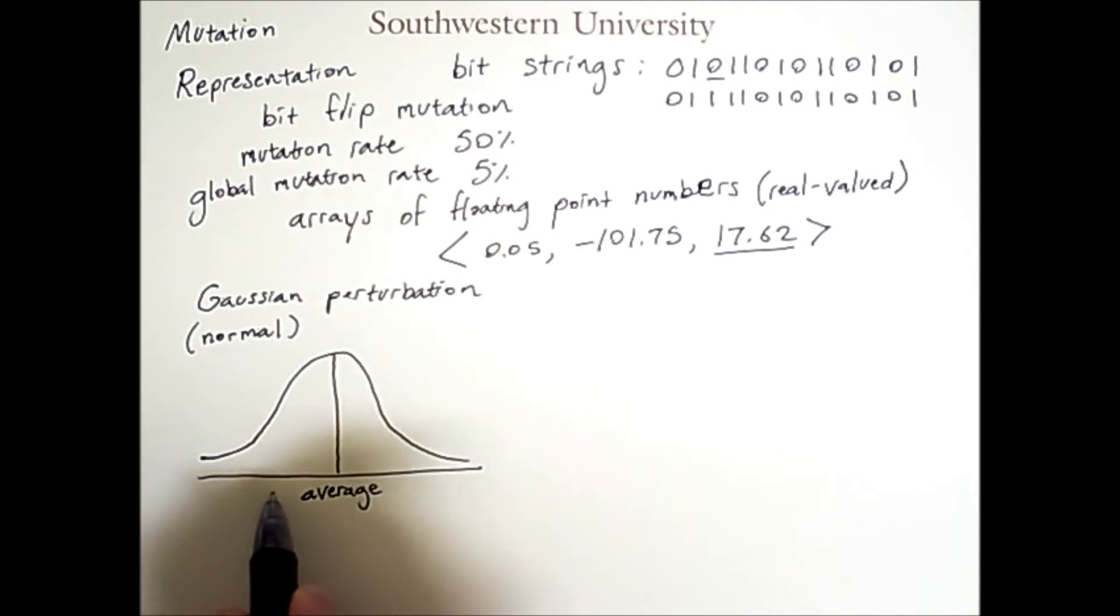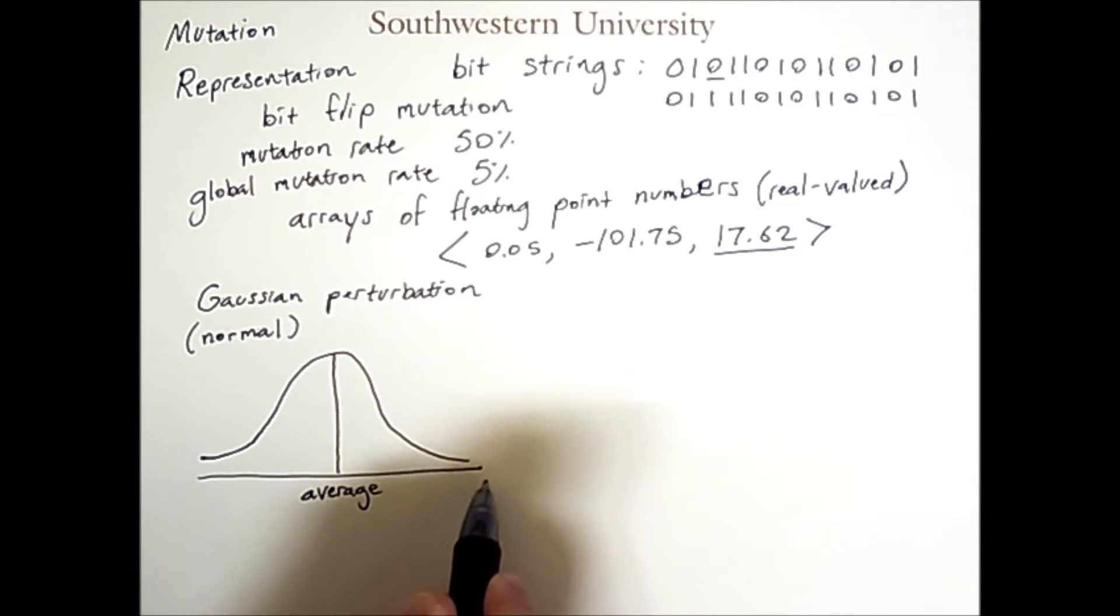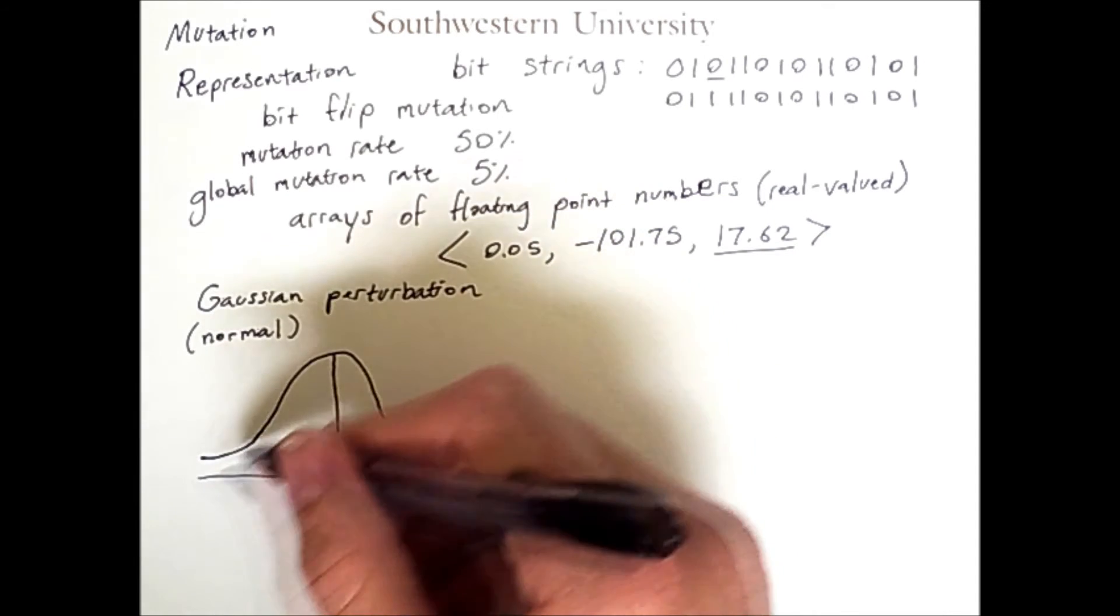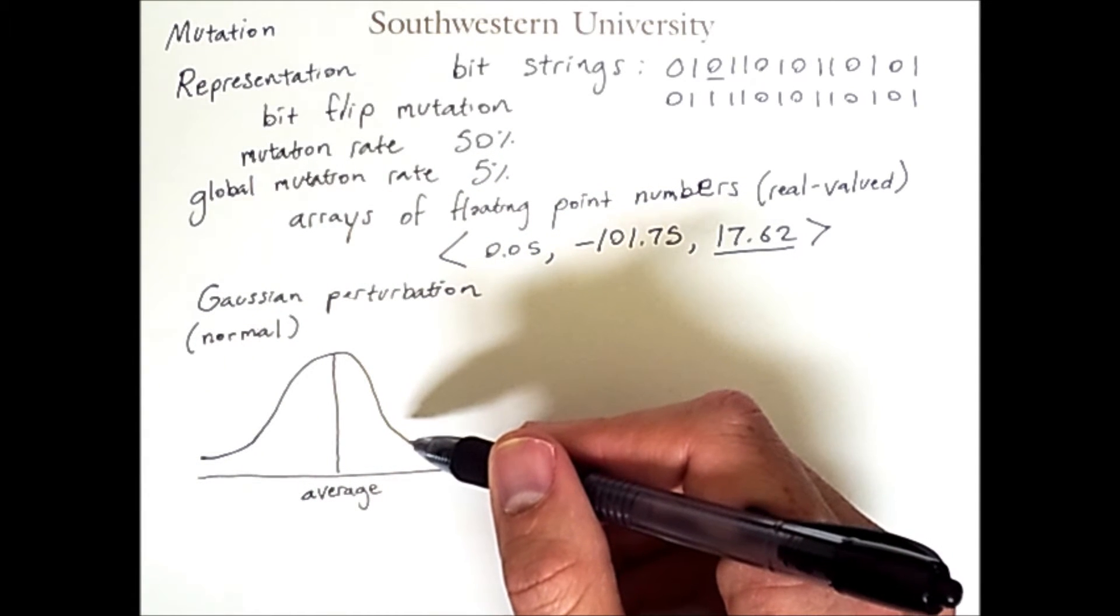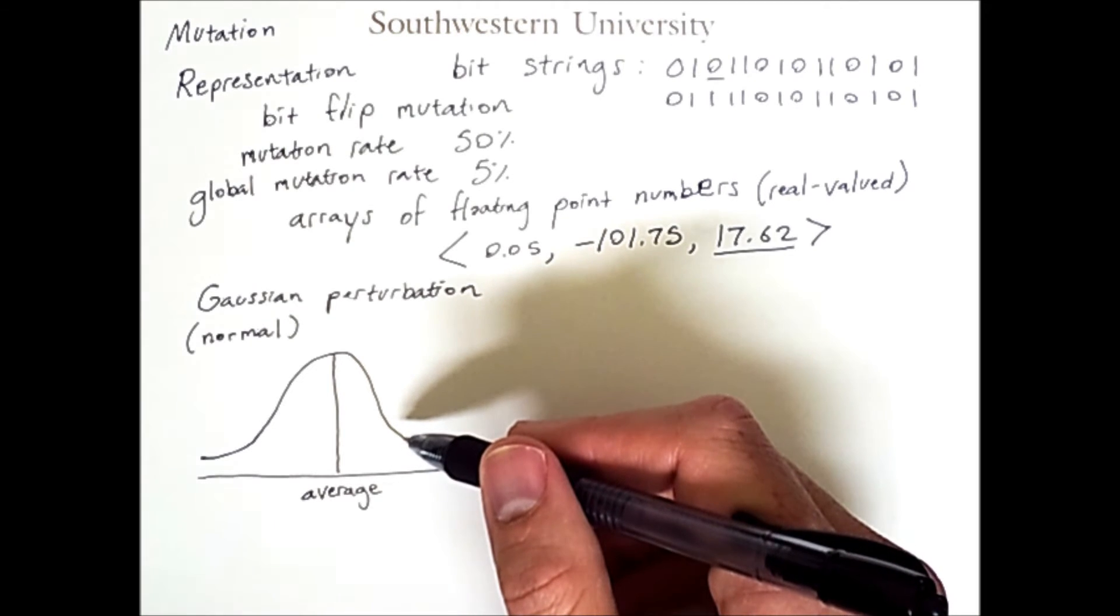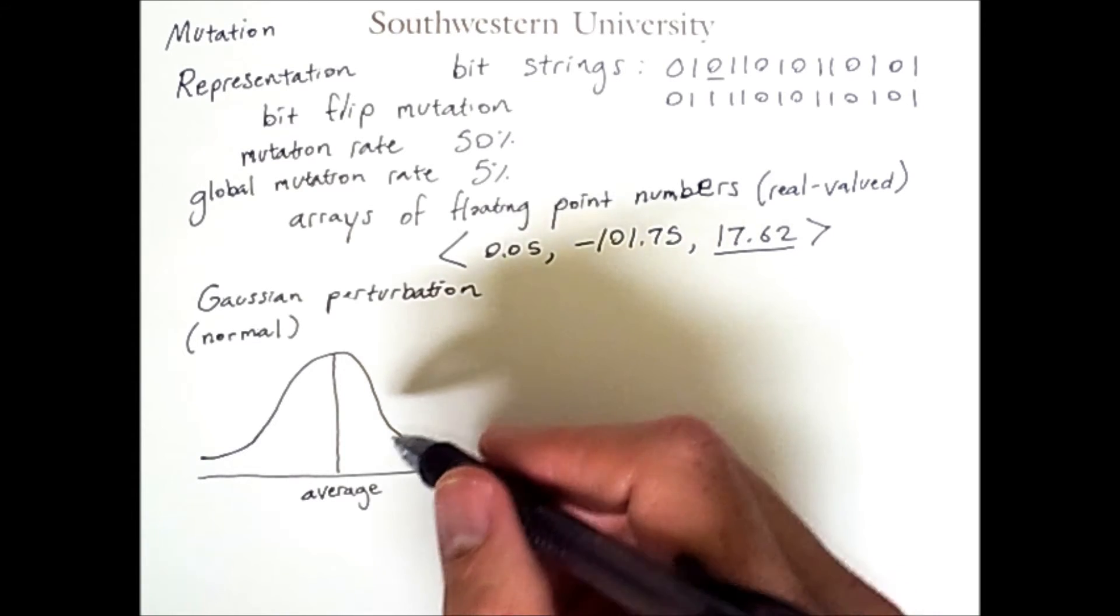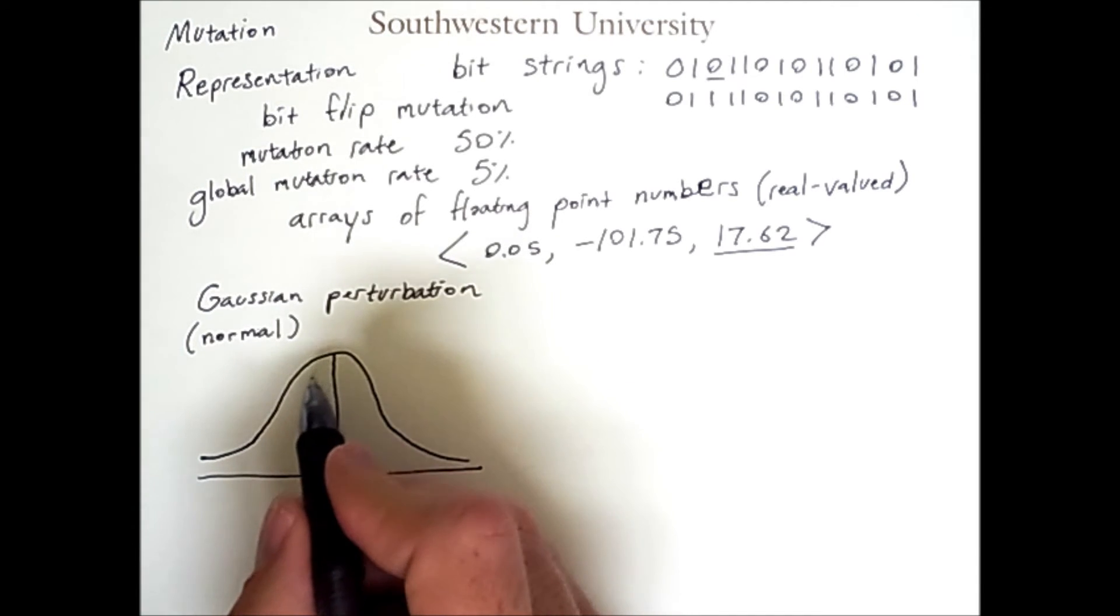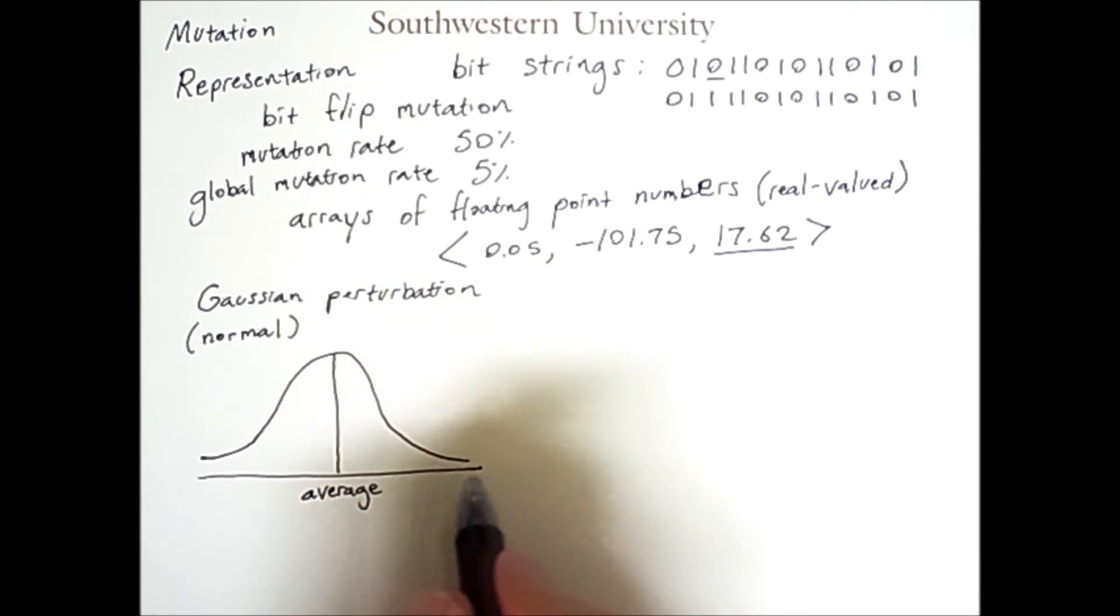Values along this x-axis are possible numbers you could generate. The height of this curve at that position is the likelihood of getting that particular number if you randomly generate a new value.